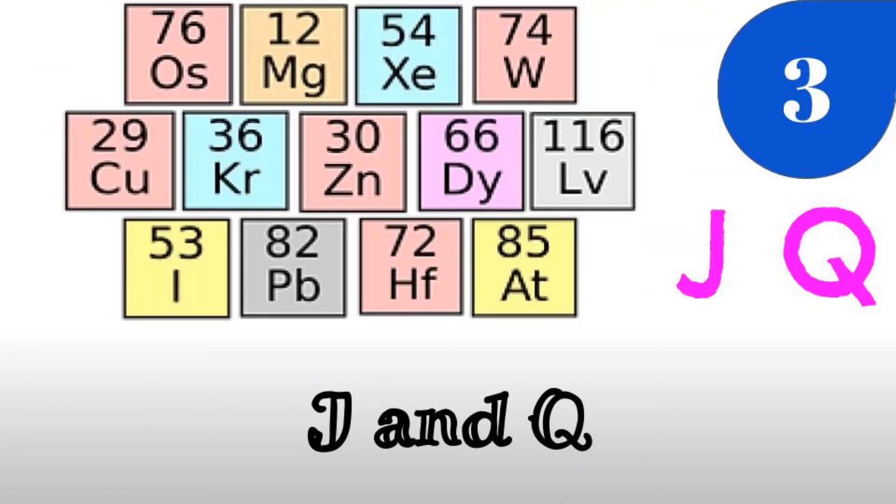Here are the other 24 letters of the alphabet found in chemical symbols of elements. These elements are osmium, magnesium, xenon, tungsten, curium, krypton, zinc, dysprosium, livermorium, iodine, lead, hafnium, and astatine.